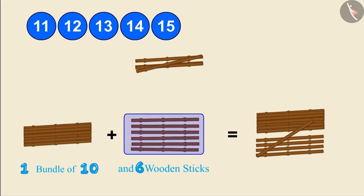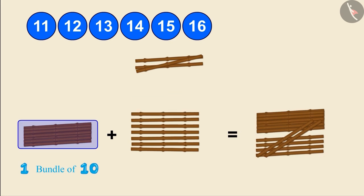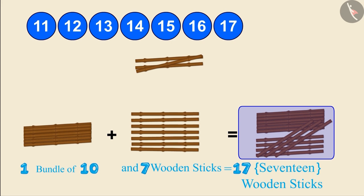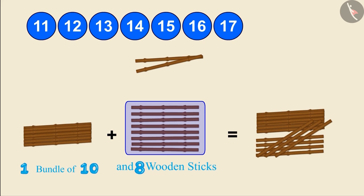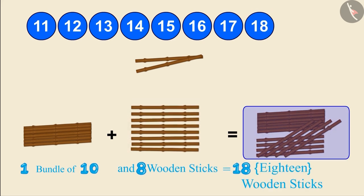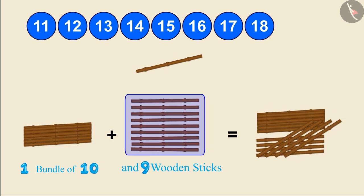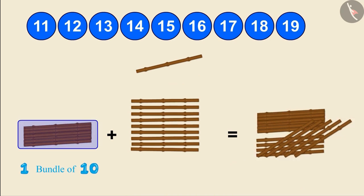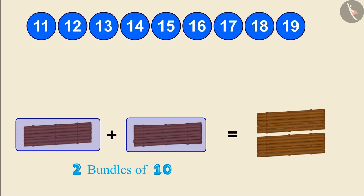One bundle of 10 and six wooden sticks make 16. One bundle of 10 and seven wooden sticks make 17. One bundle of 10 and eight wooden sticks make 18. One bundle of 10 and nine wooden sticks make 19 wooden sticks. And one bundle of 10 and 10 more wooden sticks make 2 bundles of 10, which makes 20 wooden sticks.